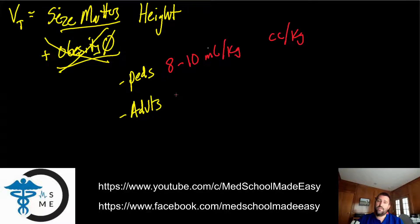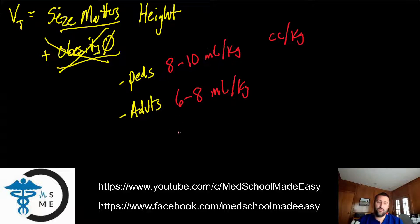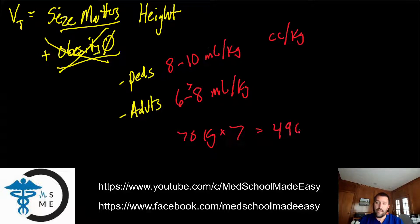In an adult, they take smaller tidal volumes given their body size. A typically accepted standard is 6 to 8 milliliters per kilogram. If you have an individual who is 70 kilograms and you're trying to figure out what to set their ventilator to, let's split the difference and say 7 ml/kg. So 70 kilograms times 7 mils per kilo equals 490 milliliters — the kilograms cancel out and you're left with 490 milliliters, which would be an acceptable tidal volume for an individual whose ideal predicted body weight is 70 kilos.